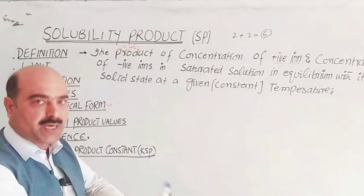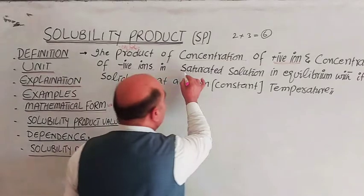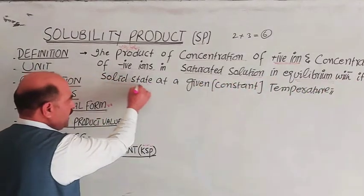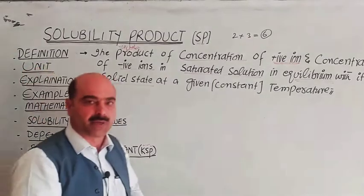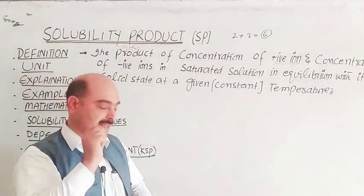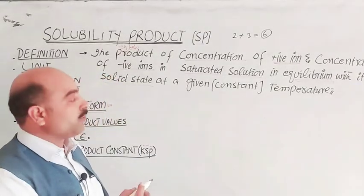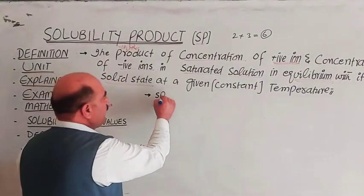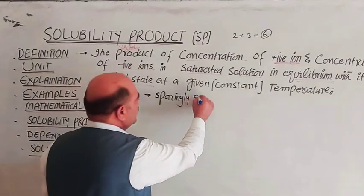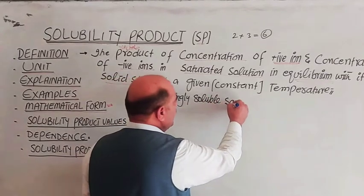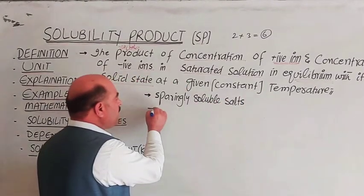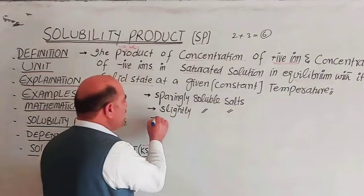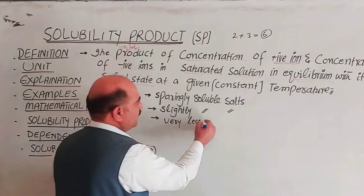This applies when the solution is a saturated solution, in equilibrium with its solid state, at a specific temperature. We will explain this with the help of examples. The concept of solubility product applies especially to sparingly soluble salts — the most important category. Sparingly means slightly soluble, or very less soluble salts.